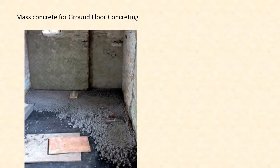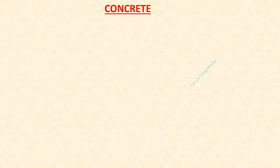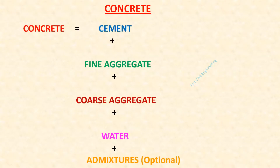Mass concrete is used for ground floor concreting. Mass concrete means there is no reinforcement in the concreting works. Concrete is composed of cement, fine aggregate, coarse aggregate, water, and admixtures.